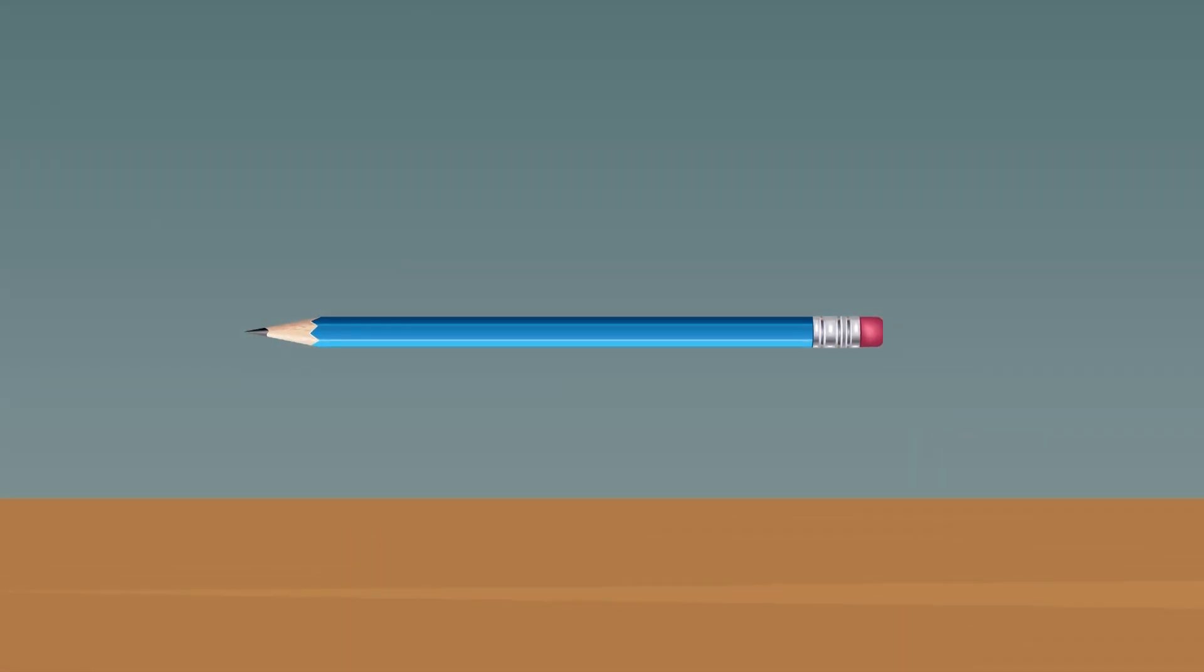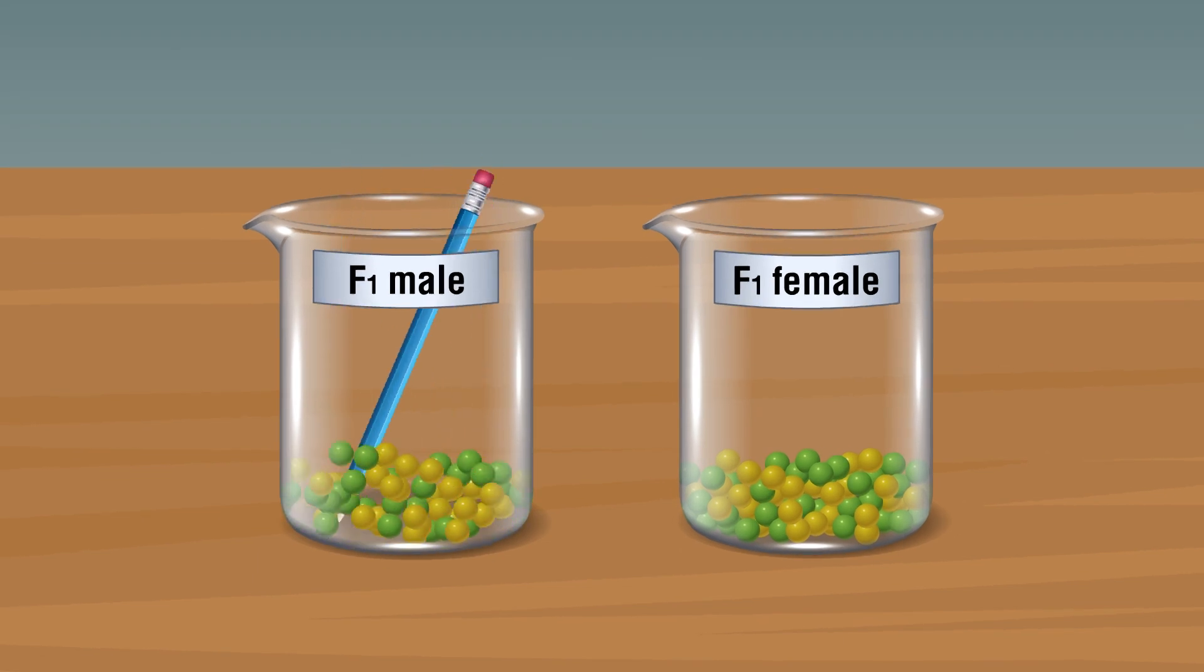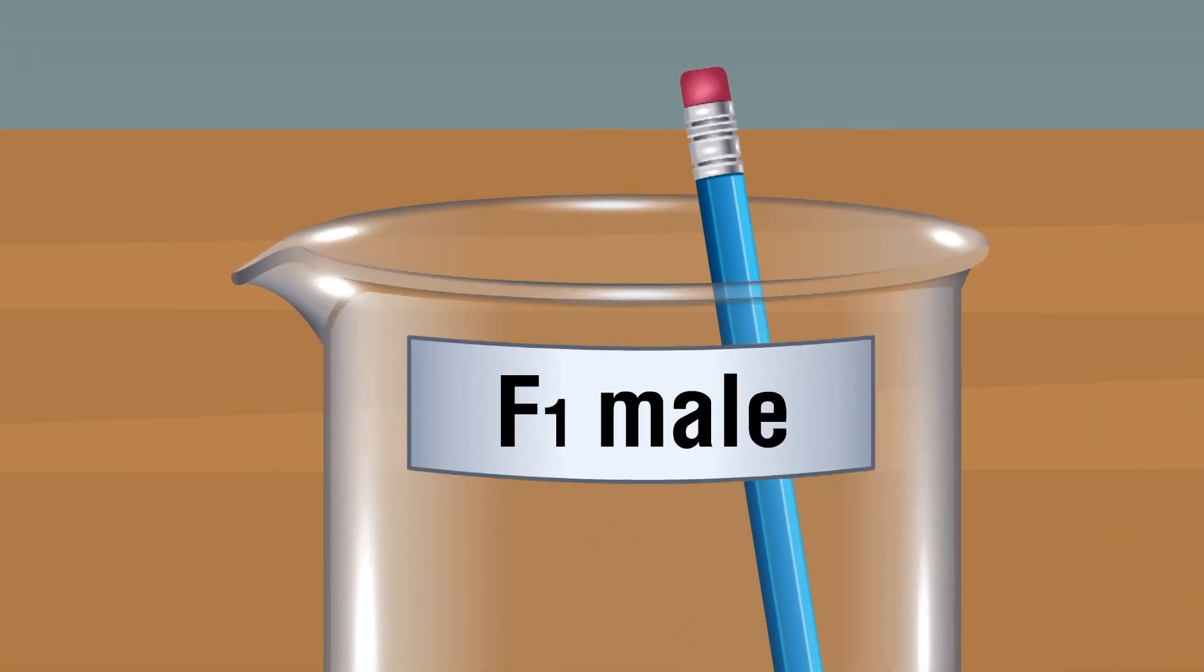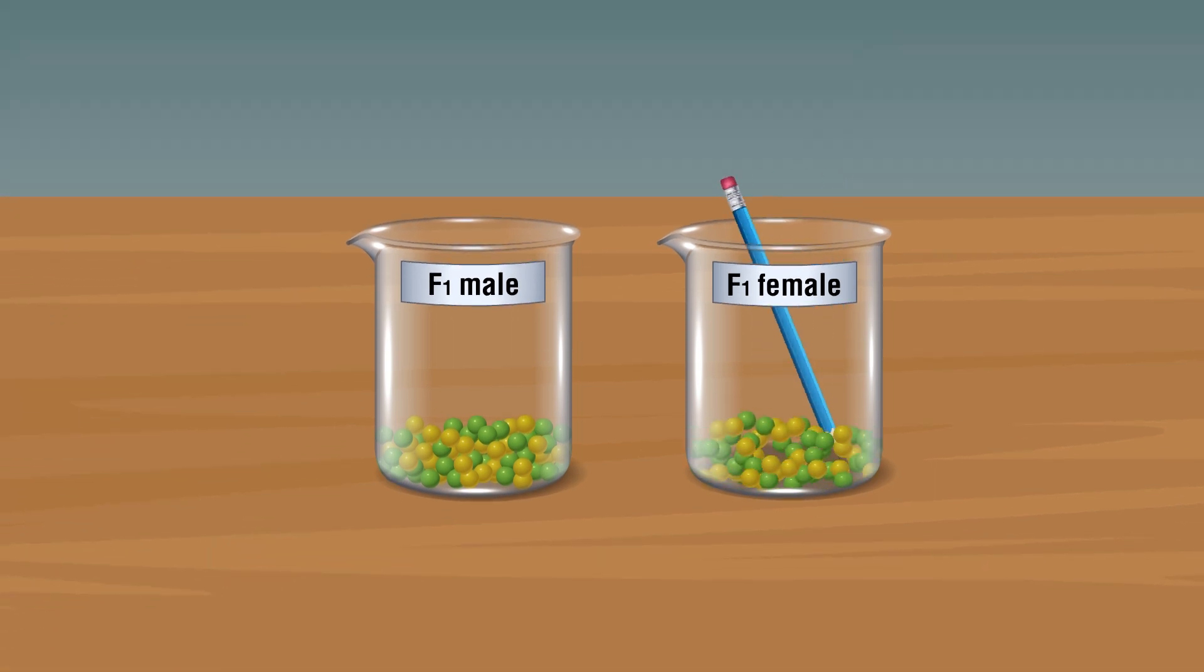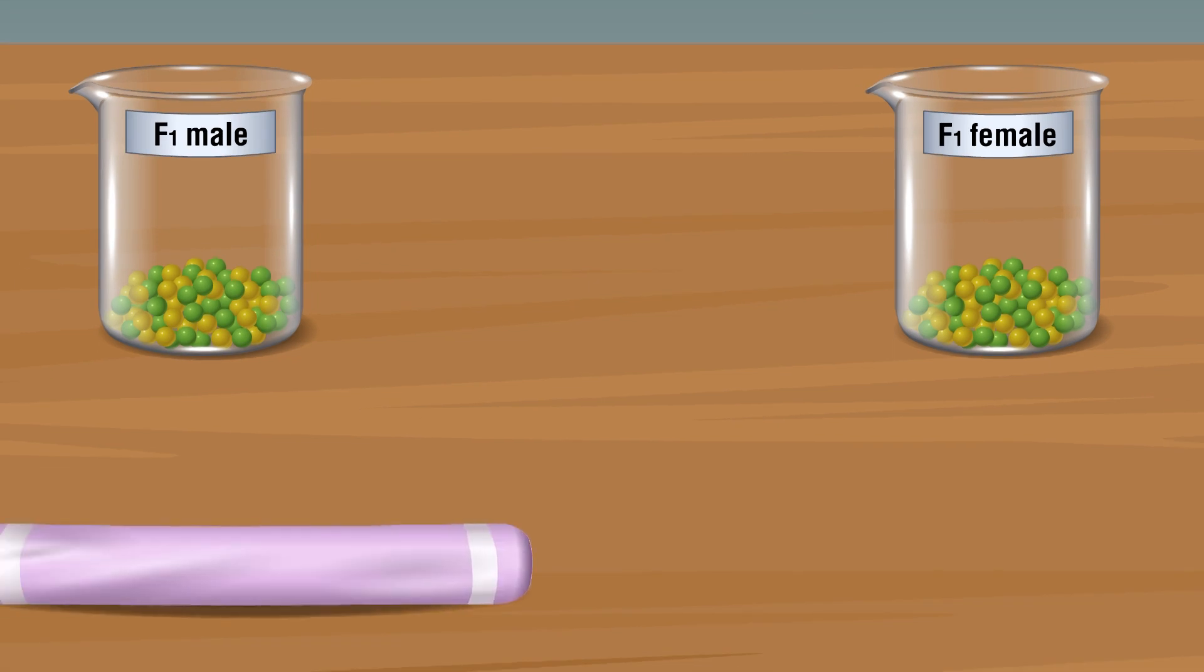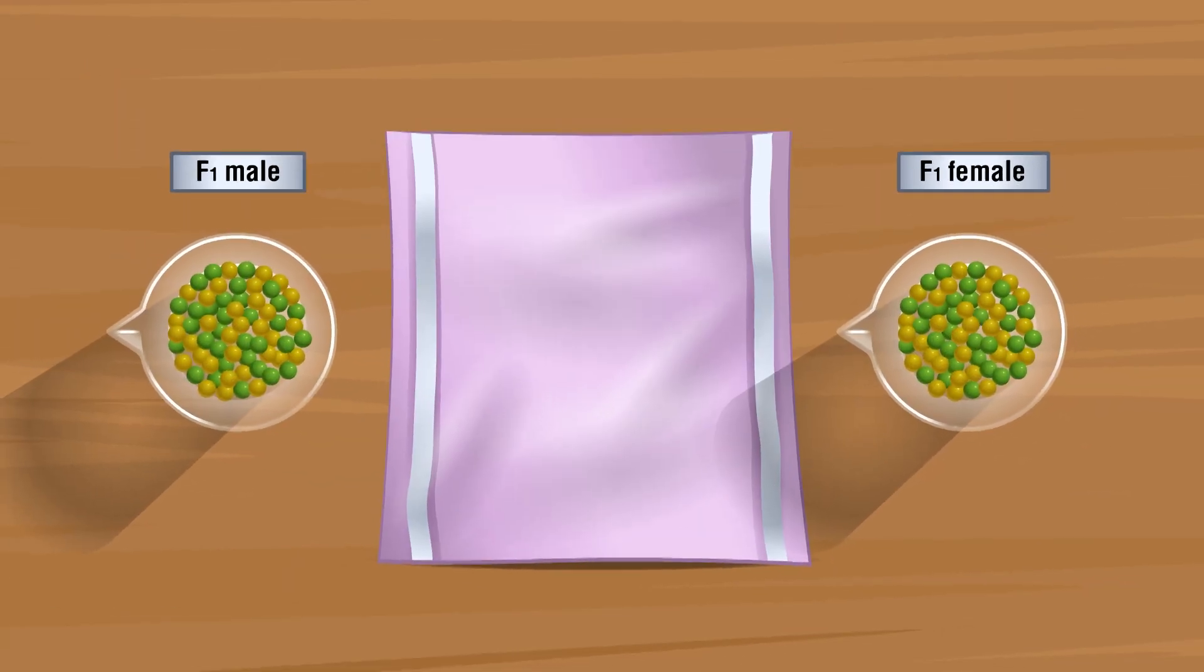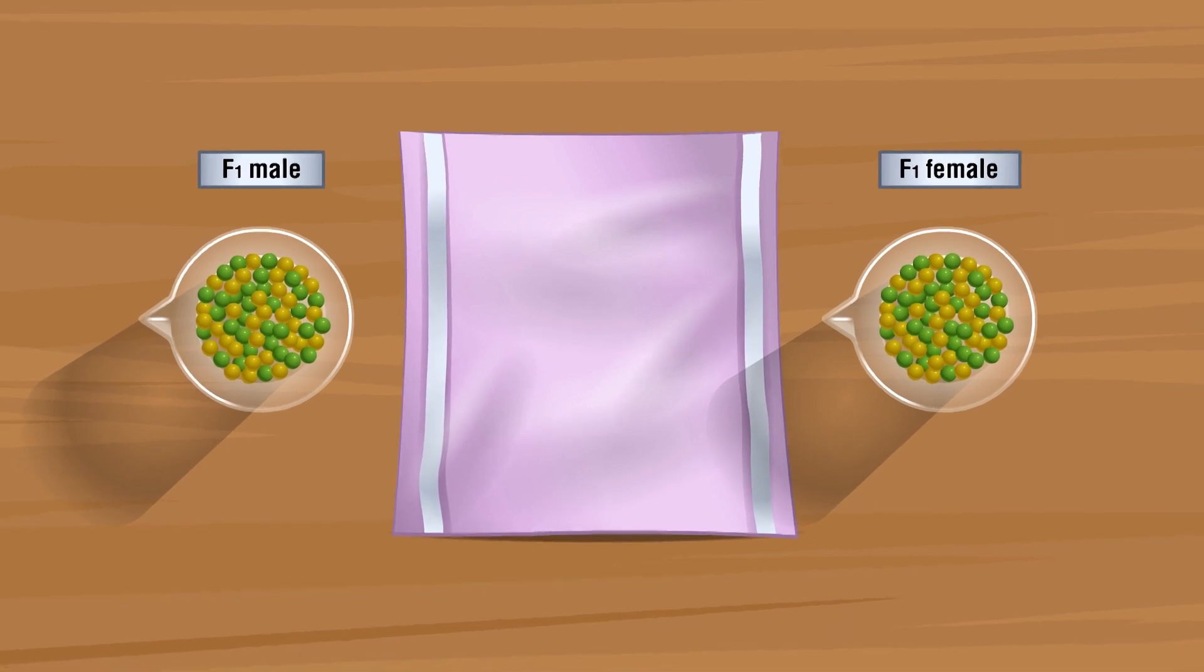Take one pencil and stir both beakers with the pencil without falling off any beads from the beaker. Spread the towel on the table and place these beakers on the left and right side of the table.